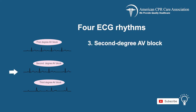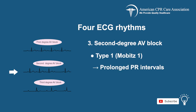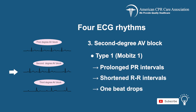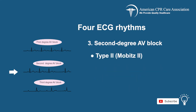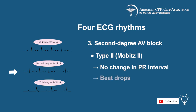The third type is second degree AV block, which is divided into type 1 or Mobitz 1 and type 2 or Mobitz 2. The type 1 second degree AV block is when the PR intervals are prolonged, the R intervals are shortened, and finally one beat drops. On the other hand, the type 2 second degree AV block is when there is no change in the PR interval, but a beat will drop.